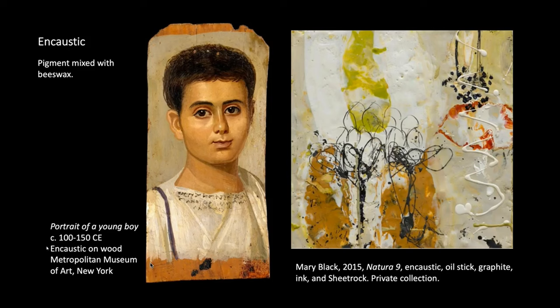Encaustic is pigment — different colors and different materials — ground up and mixed with beeswax. If you've ever handled beeswax, you know that when it's cold it's very hard, but you can heat it up and it becomes viscous. That is very important to the process, the application, and the look.